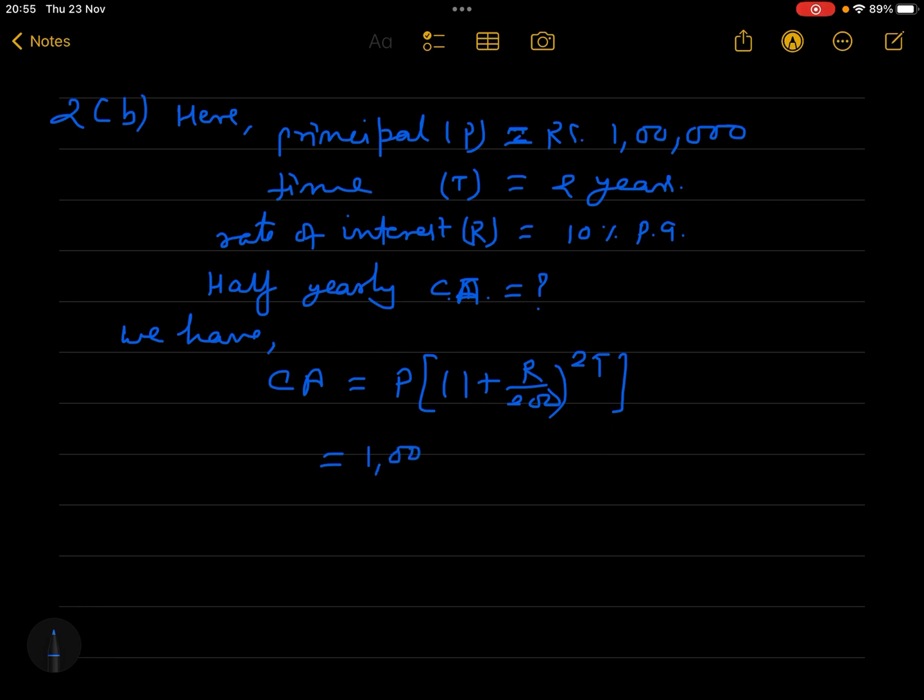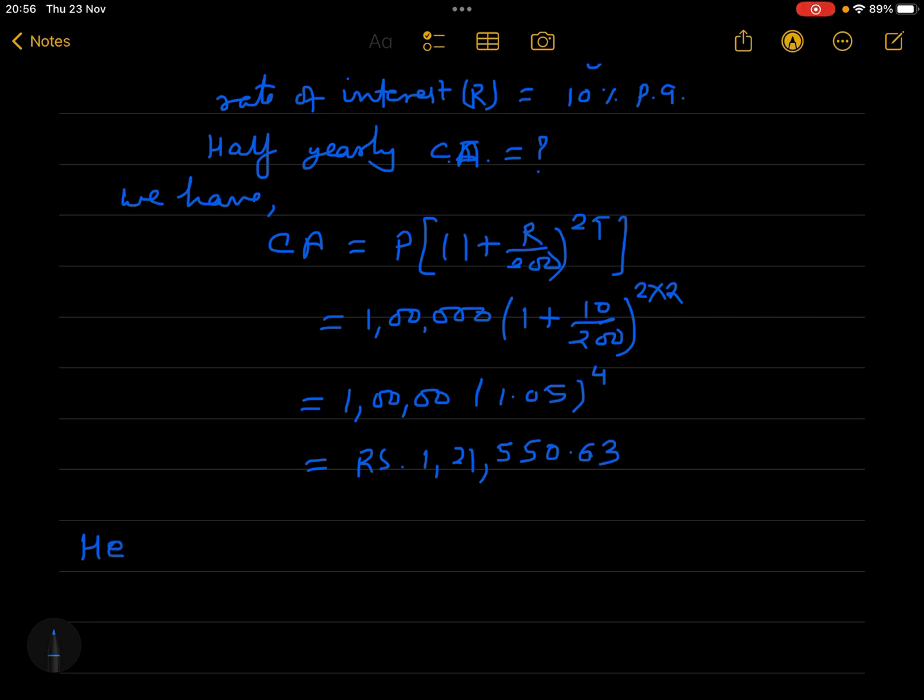So 1,00,000 is the principle. 1 plus R is 10 by 200, to the power 2T, which is 2 times 2. This equals 1,00,000 times (1.05) to the power 4. If you calculate, you will get rupees 1,21,550.63.